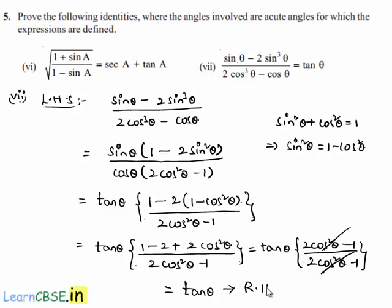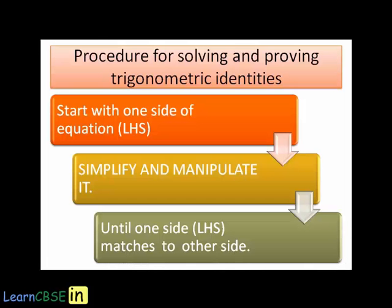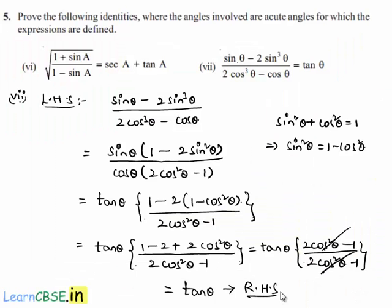This is our right hand side. Since LHS is equal to RHS, we can see that sin theta minus 2 sin cubed theta whole divided by 2 cos cubed theta minus cos theta is equal to tan theta.